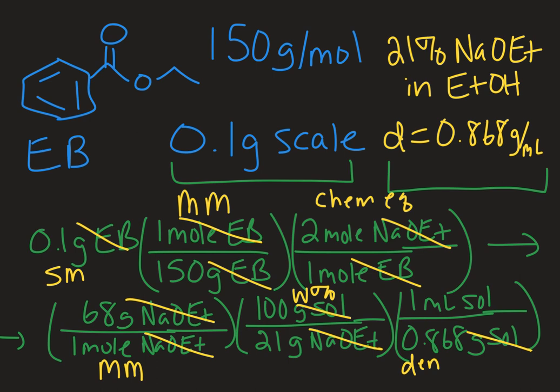So that was a long one. When all is said and done, you end up needing about a half of a milliliter of this basic solution for your reaction. So this has been a look at how to do pre-lab calculations when you have a reagent that is expressed in percent by mass concentration.